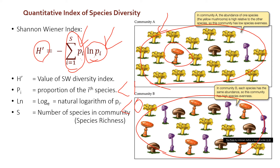The natural logarithm of a proportion is a negative number, since all proportions are less than one. So when we add up all those products we get a negative number, and we then multiply the entire sum by negative one to convert it to a positive number, since it's easier to work with. The minimum value of h-prime is theoretically zero, and it increases as both species richness and species evenness increase. We do a lab on this where we calculate the diversity index of bird communities using the Breeding Birds Survey.